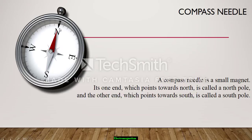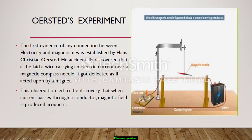A compass needle is a small magnet. Its one end, which points towards north, is called north pole. This one is north pole. And the end which points towards south is called south pole.